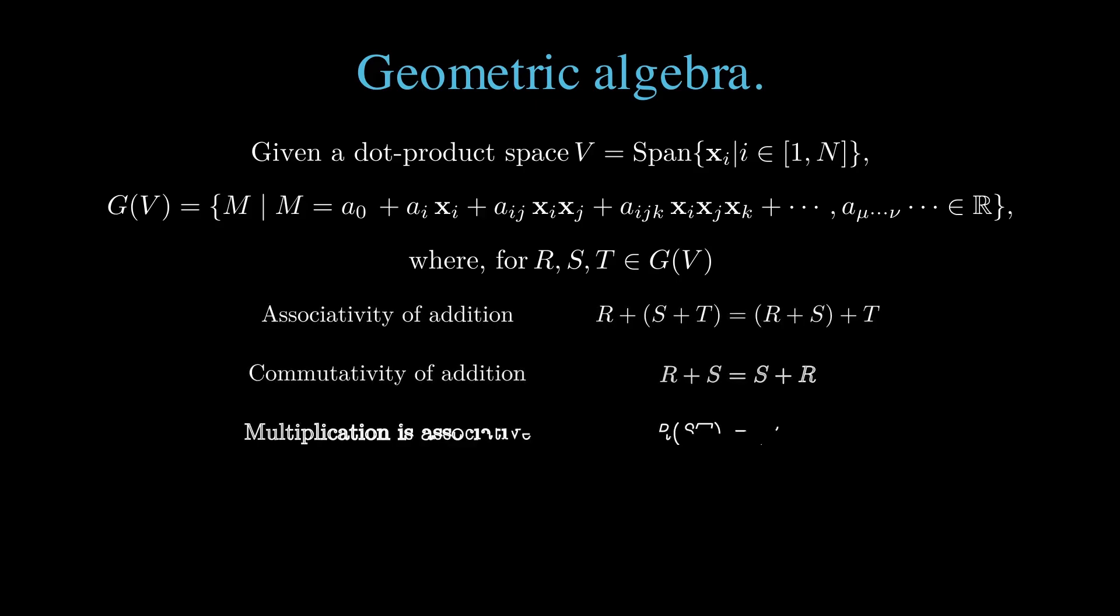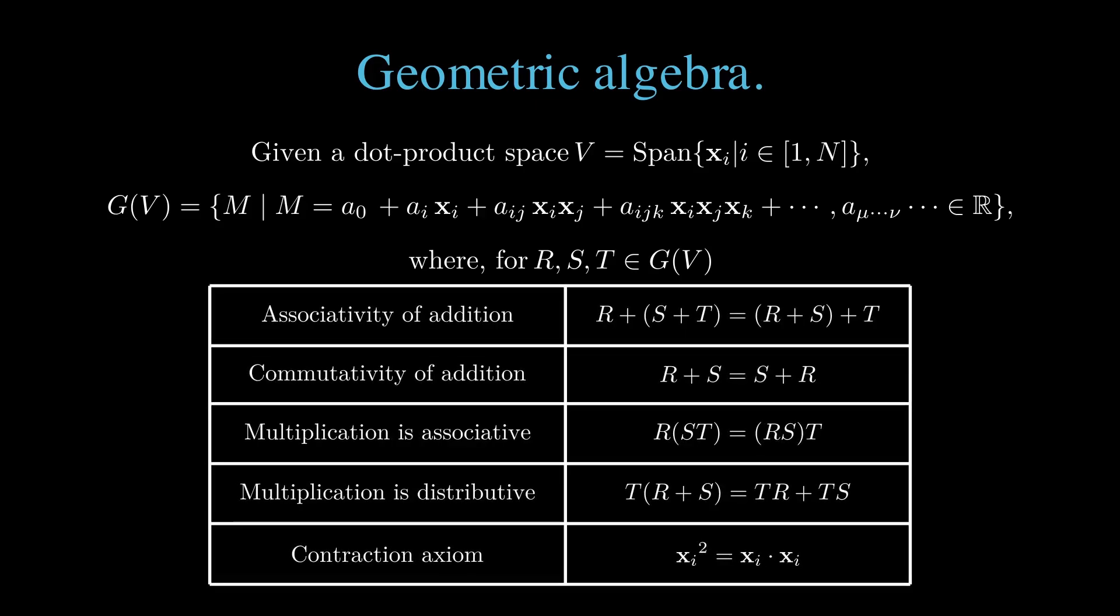A geometric algebra has an associative and commutative addition operation, and has an associative and distributive, but not necessarily commutative multiplication operation.